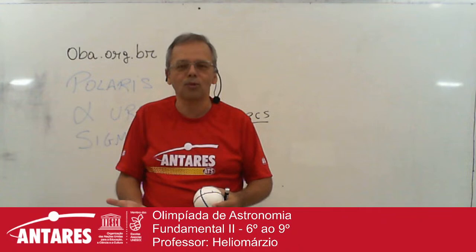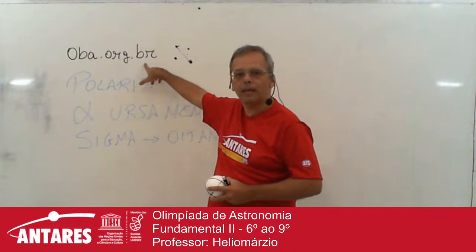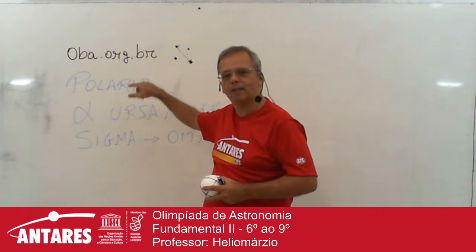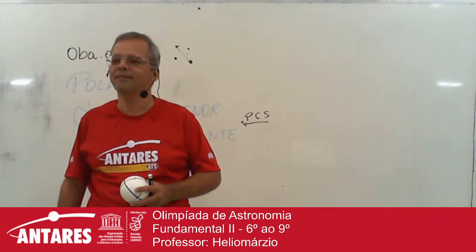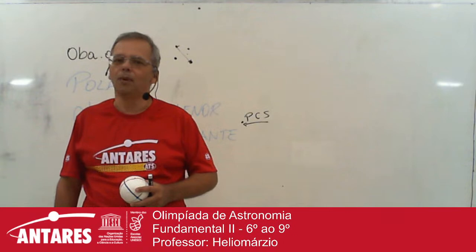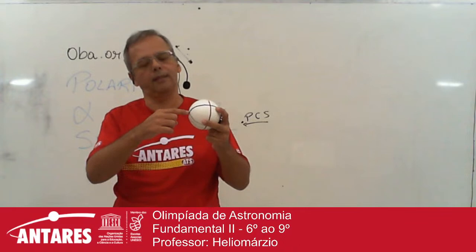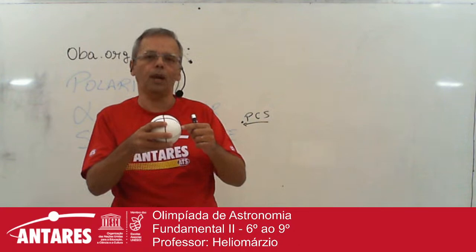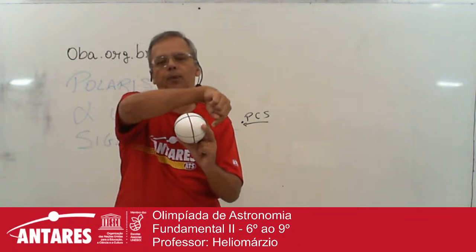Só quero lembrar: oba.org.br tem um aplicativo da OBA. Baixa isso para o seu celular — vale a pena para revisar a matéria. Sofia Queiroz perguntou se tem algum outro continente, como a Ásia, que consegue ver a estrela Sigma ou Polaris. Quem está no Hemisfério Sul vê a estrela Sigma do oitante. Quem está no Hemisfério Norte vê a estrela Polaris. Jamais quem é do Sul pode ver a estrela Polar do Norte, ou quem é do Norte pode ver Sigma do oitante — por causa da curvatura da Terra que vai ficar na frente.